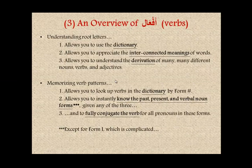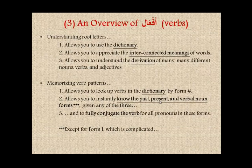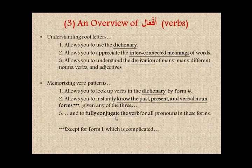Words can be broken down into root letters and structure — you superimpose root letters onto forms and structures to create words. Memorizing verb patterns allows you to look up verbs in a dictionary by form number (Roman numerals). It also allows you to instantly know the past tense, present tense, and verbal noun forms given any one of the three. Furthermore, knowing the wazn allows you to fully conjugate the verb for all pronouns in all tenses — that is the power of the wazn in Arabic.